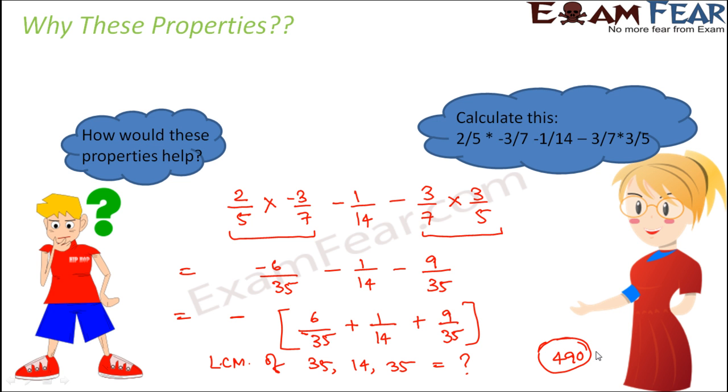So now when you actually try to calculate this, you get minus 84 plus 35 plus 126 divided by 490. So this is what you get. So when you calculate it further, you get minus 245 divided by 490 and this comes out to be minus 1 by 2.